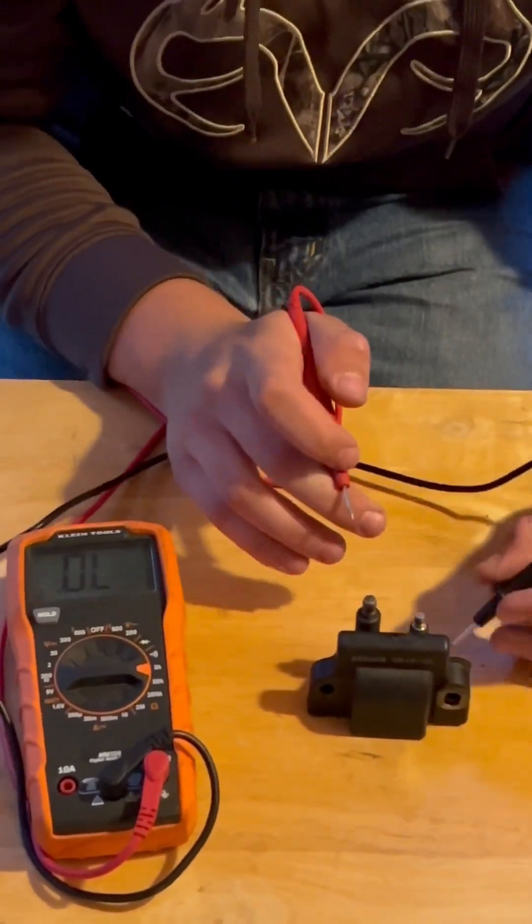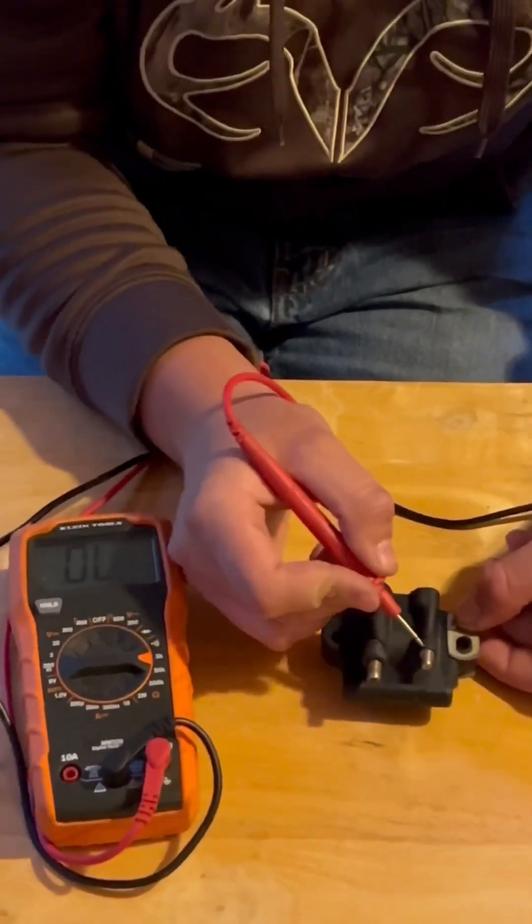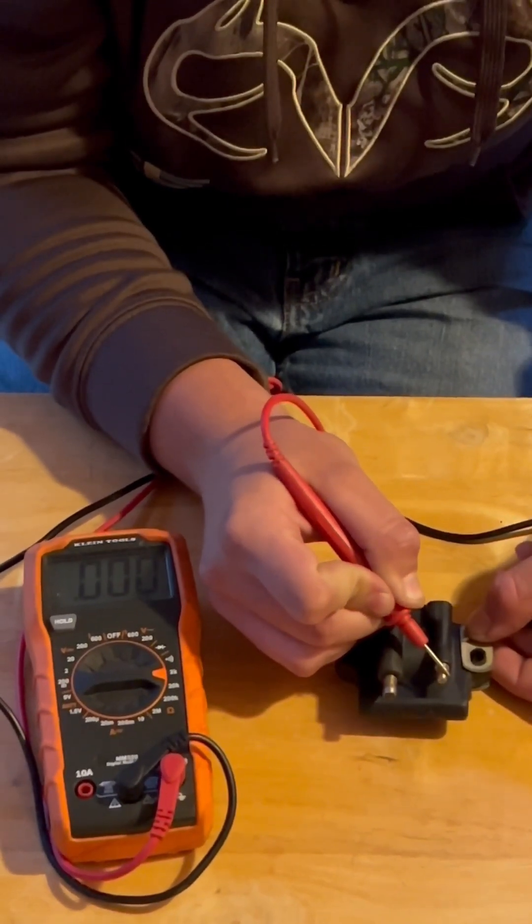I'm going to do the same thing to this coil. Negative lead on ground and the hot onto the primary and you can see that reads zero so it's good.